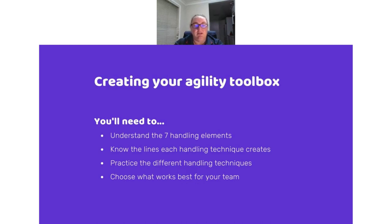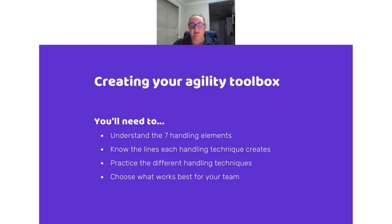The first thing you really need to understand is how your seven handling elements all work together. In our One Mind Dogs philosophy, the seven handling elements are: motion, position, connection, chest, feet, hands, and voice. We use all of those handling elements to tell our dogs where we want them to go. In the follow-up emails, Nikki's adding a link to the seven elements webinar we did earlier this year, which will give you a deep dive into how those seven handling elements work in telling our dogs where we want them to go.